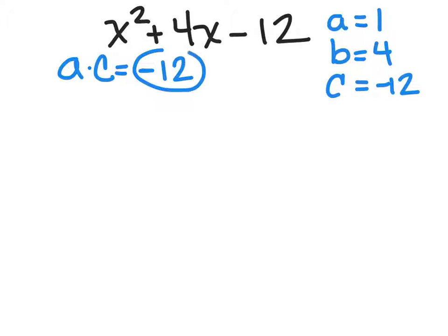Now, out of negative 12, I need to find the factors, two factors, a multiplication that will give me the answer as negative 12. But when I combine those two numbers, I get a positive 4.